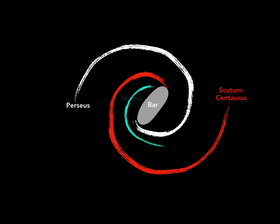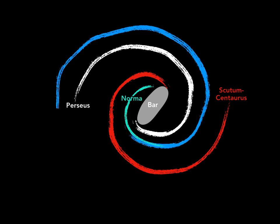So the Norma arm here is this light green one, and then there's another newly claimed arm called the outer arm, which at least in the picture looks like it could extend off the Norma arm. Whether that's true, I'm not sure I know or that anyone knows.